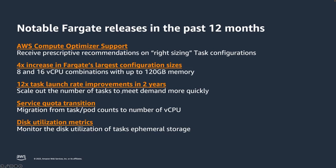The fourth release is service quota transition, which is done automatically if you were already using ECS and Fargate — migrating from a number-of-tasks quota to number-of-virtual-CPUs. And last, Fargate now adds support for monitoring storage utilization. You can use CloudWatch Container Insights to do deeper monitoring of your task ephemeral storage. Beyond that, we are working on other features driven by customer needs, so stay tuned.